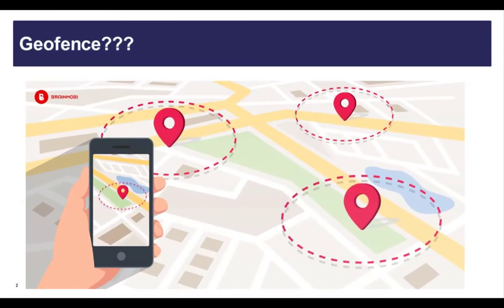So what is a geofence? A geofence creates a circular area where employees may punch. The geofence interacts with the GPS components in your employee's cell phones and the UKG Mobile app to allow punching. The purpose of this virtual border is to ensure that your employees are at the location you want them to be at when they punch in on their phones.